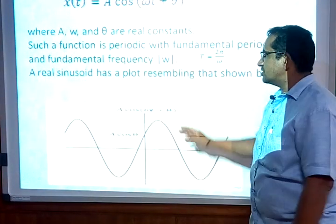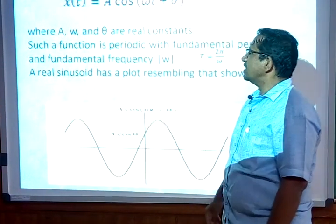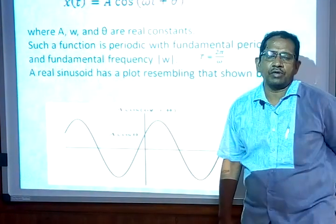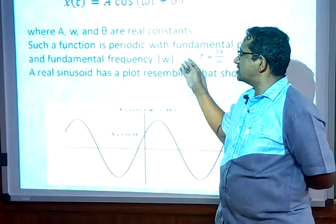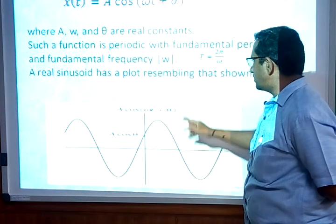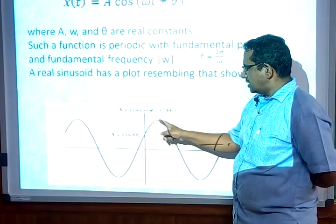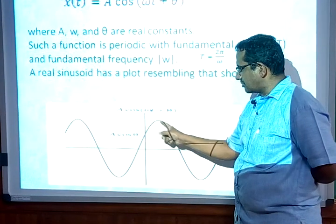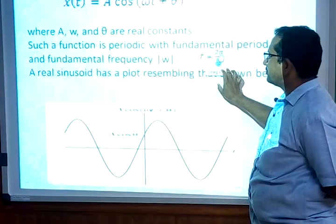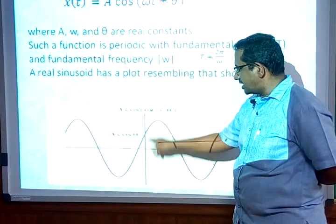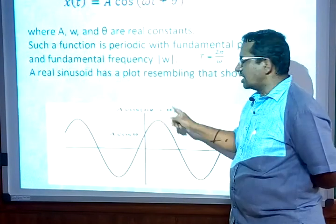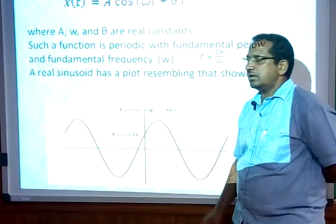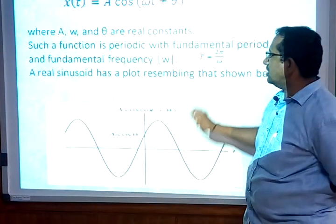Next, we discussed the sinusoidal function. Cosine and sine are sinusoidal in nature. The cosine function has a time period T equal to 2π/ω, and a fundamental frequency f, where ω is the angular frequency equal to 2πf. If theta equals 0, the maximum value occurs at t equal to 0. When theta is not equal to 0, there is a phase variation shown in the pictorial representation.